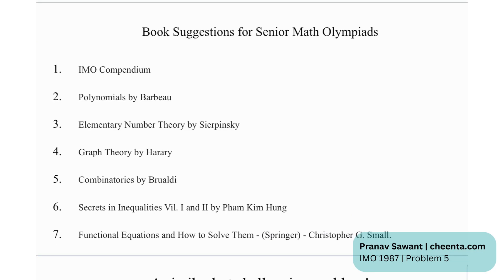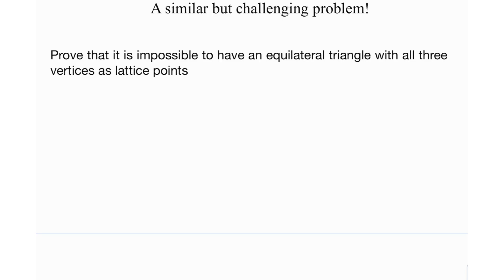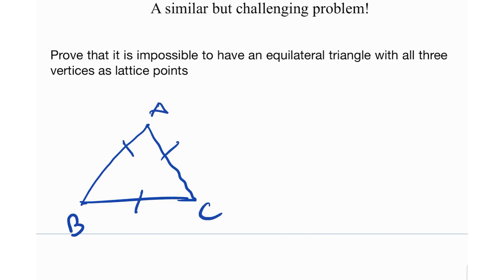We have some book recommendations for senior math Olympiads: AMC compendium, Polynomials by Barbeau, Elementary Number Theory by Sierpinski, Graph Theory by Harary, Combinatorics by Brualdi, Secrets in Inequalities, and Functional Equations and How to Solve Them by Christopher G. Small. For a challenge problem — also a geometrical application of Pick's theorem — prove that it's impossible to have an equilateral triangle with all three vertices as lattice points. Try it out and let me know!